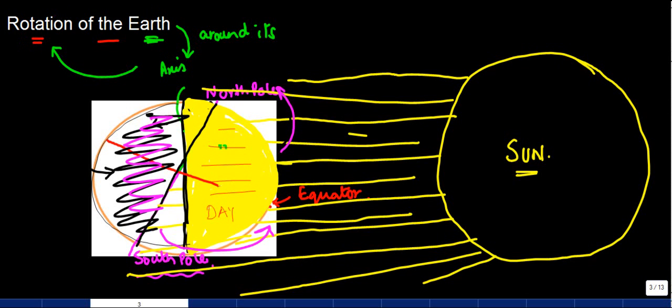So this one rotation, interestingly, is completed around the Sun in 24 hours. And that's why we have this day which is of 24 hours. The Earth takes around 24 hours to complete one rotation around its axis. And this 24-hour period is known as the Earth Day.